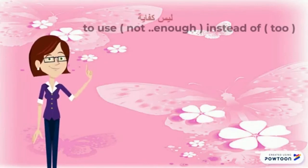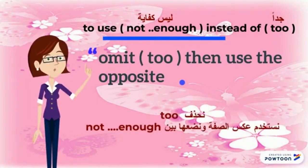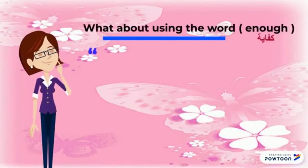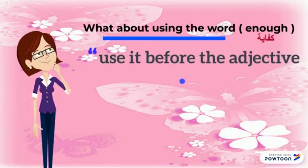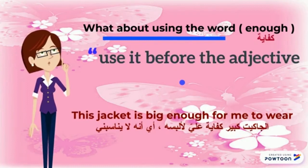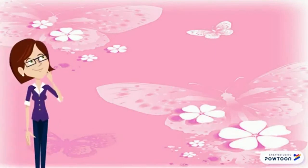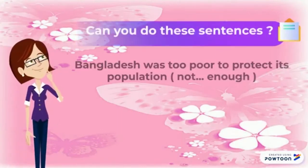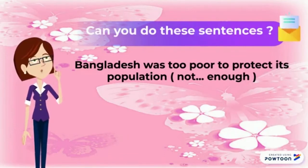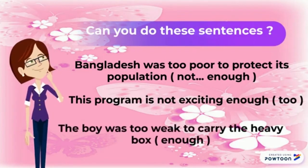To use 'not enough' instead of 'too,' we have to omit 'too,' then use the opposite adjective. What about using the word 'enough'? We use it before the adjective. This jacket is big enough for me to wear. Can you do these sentences? Bangladesh was too poor to protect its population. This program is not exciting enough. The boy was too weak to carry the heavy books.